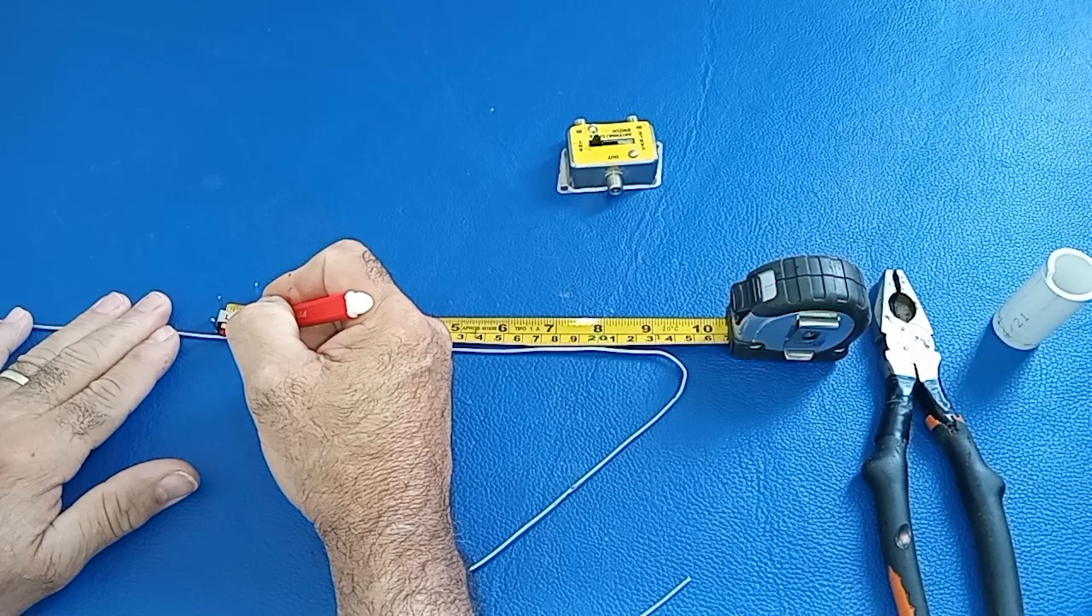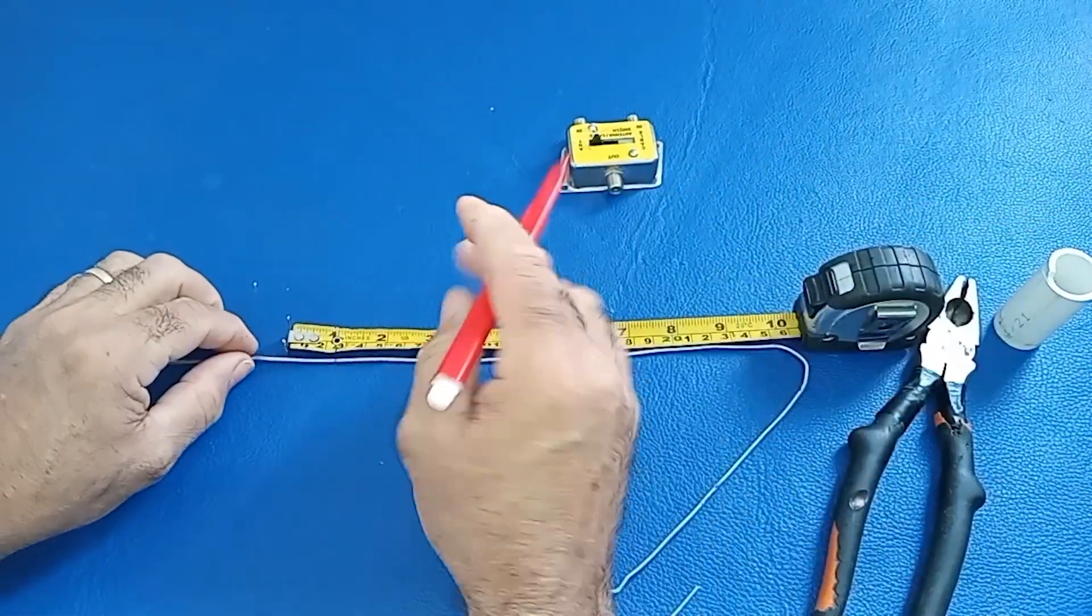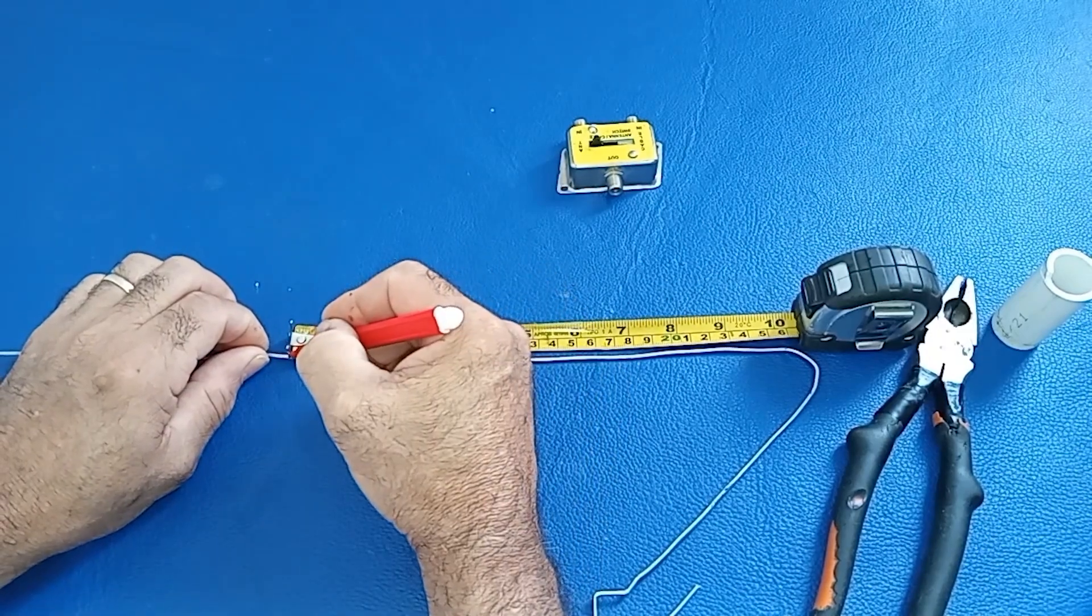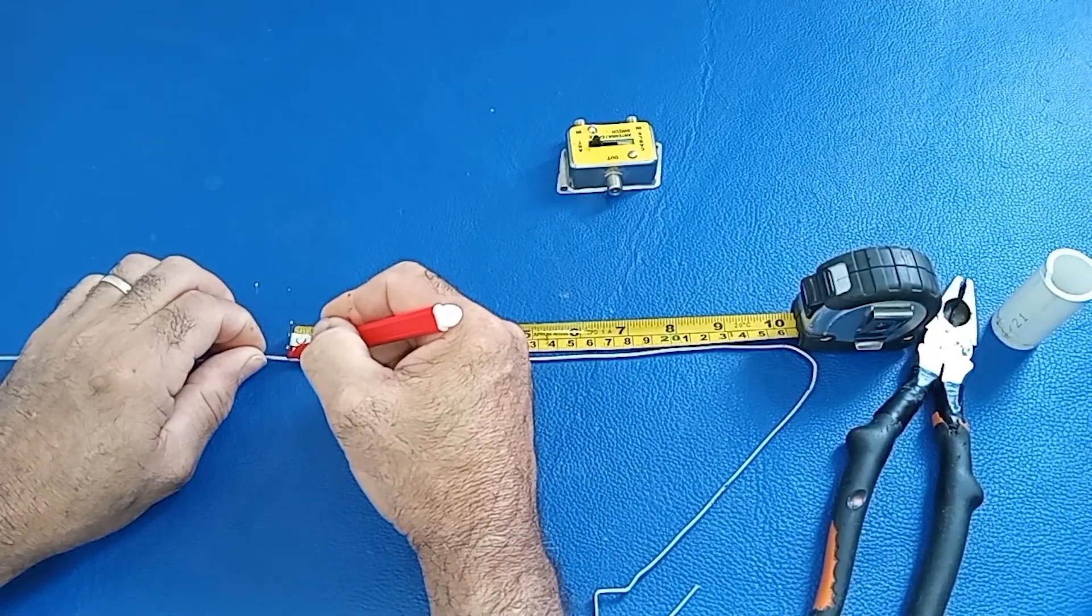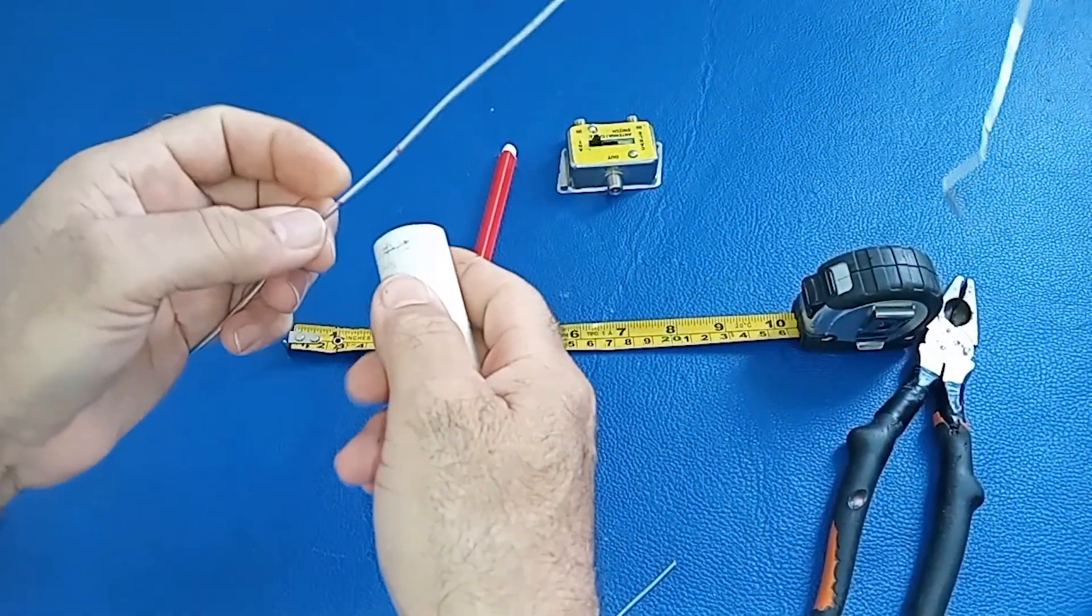Step four, bending for adjustment. At the 23.2 centimeter mark, bend the cable again at a 90 degree angle. Then at the 2.5 centimeters mark, make a final 90 degree bend and straighten the remaining cable at the 1 centimeter mark.